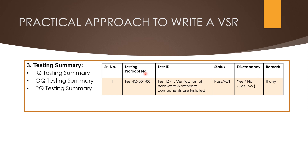Here you can see I have given an example to provide the relevant details with respect to the IQ testing summary. There will be a testing protocol number, and test IDs — for example, test ID 1 is verification of hardware and software components installed, its status whether pass or fail, discrepancy status whether yes or no, the discrepancy number, and a remarks column for any additional notes. Likewise you can mention the OQ protocol testing summary and PQ testing summary.